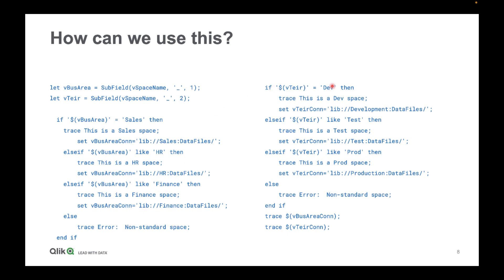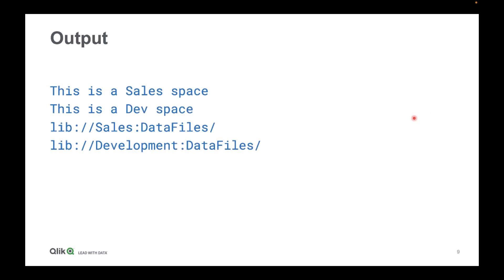Then we look at the tier. We determine if it's dev, test or prod. If it's dev, we set a connection to the development data files. This makes the setup very flexible. You can use whatever naming convention works for you, but the idea is that we've been able to understand from our app — purely based on the space it's in — what connections it should use for different purposes. Here's the output of that code: we can determine it's a sales space and a dev space, and we've set the connections to sales data files and development data files.